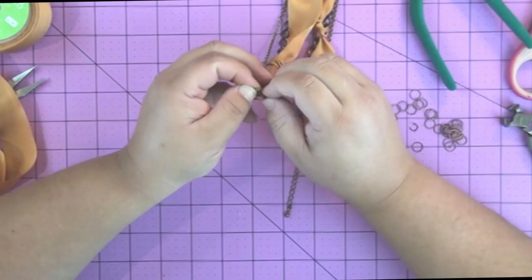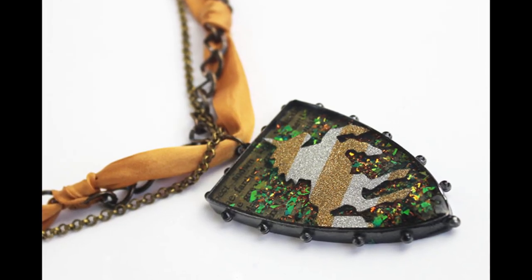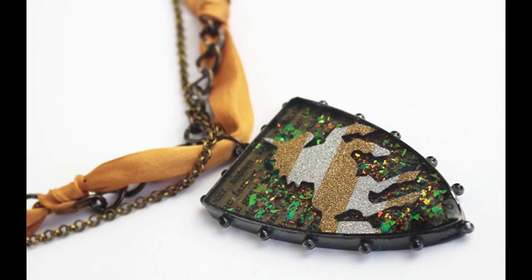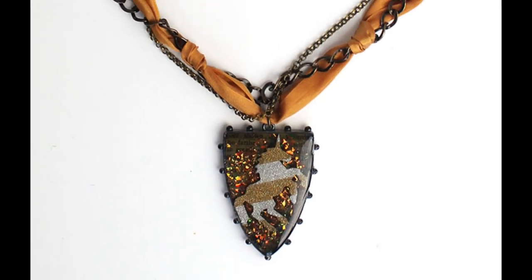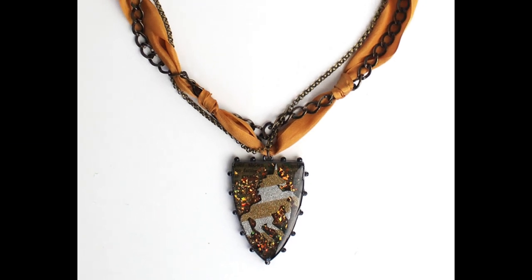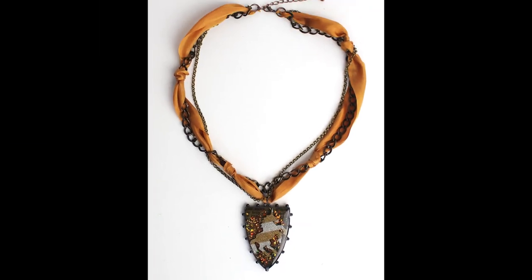And then to the crimp beads, I'm attaching my clasp, and that finishes off the necklace. So here you can see the opalescent background there in the pendant, and then you can see the asymmetrical ribbon tying on that finished piece.